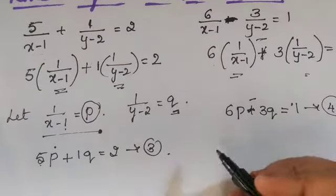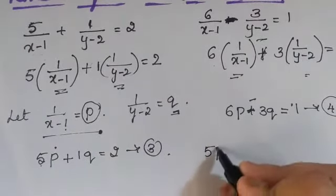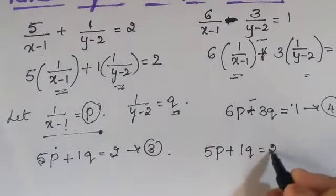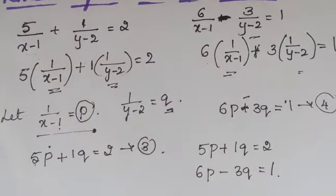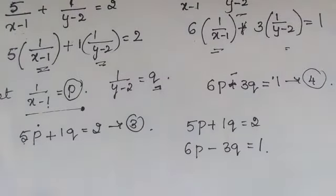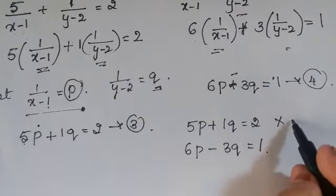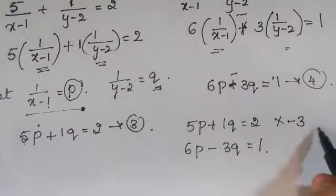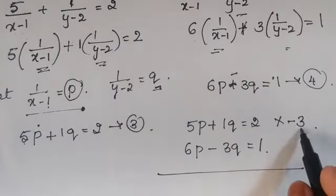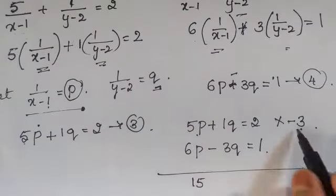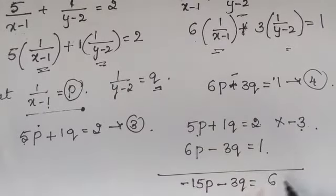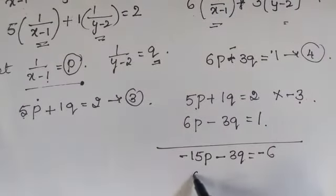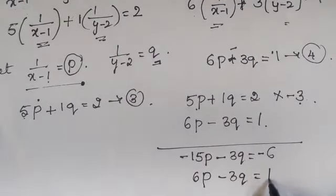So now we can use any method. We know two methods: substitution method and elimination method. For this instance, we will use the elimination method. I want to eliminate the q terms. So if I multiply equation 3 by minus 3: minus 15p minus 3q equals minus 6. The second equation remains as it is: 6p minus 3q equals 1.